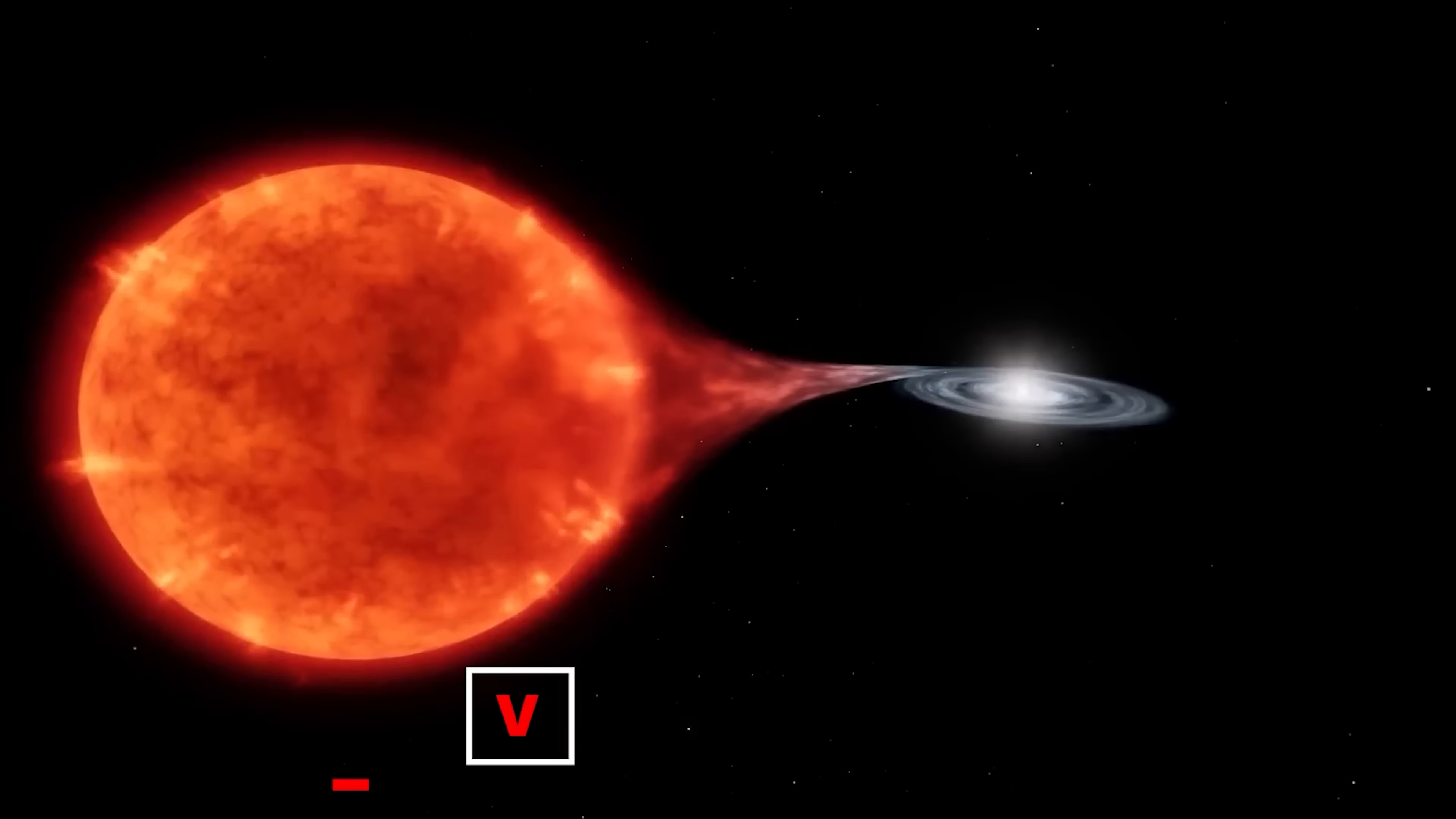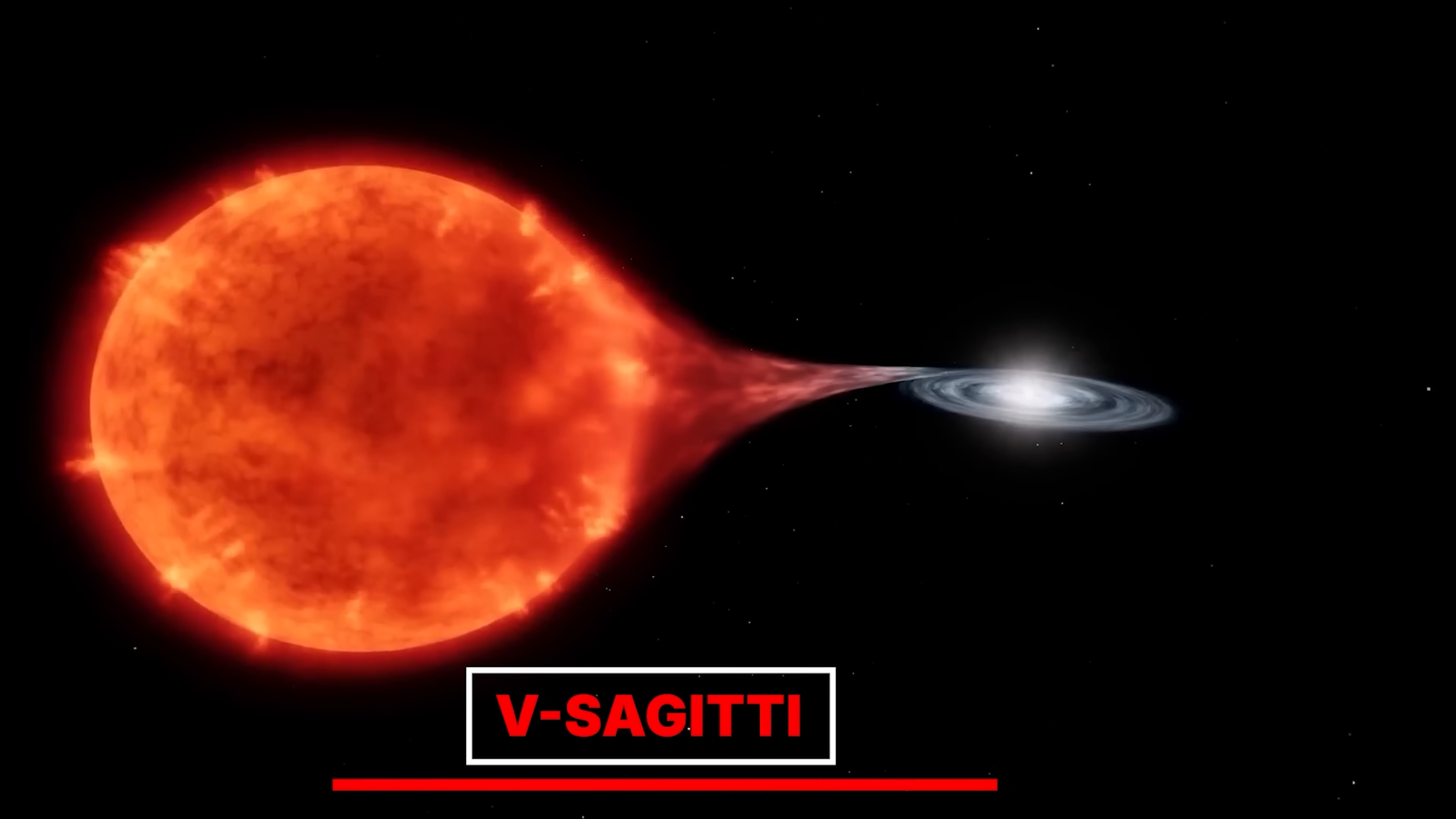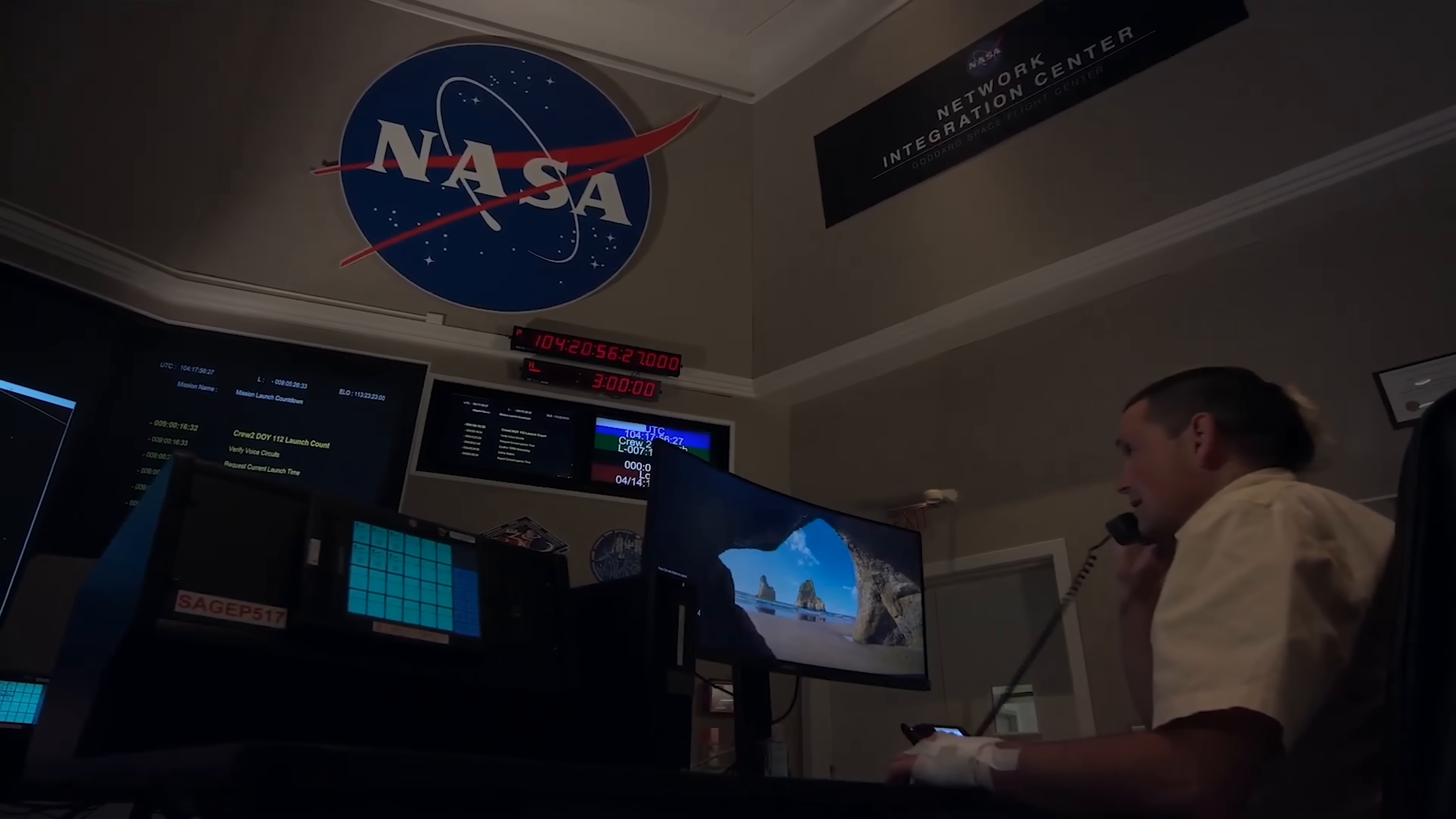A white dwarf at its surface can be half a million degrees. It's even hotter in the interior. Fresh observations have thrust V. Sagittae back into center stage, and this time the tension is unmistakable.